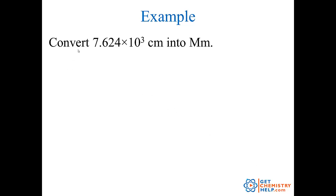Okay, great. Let's try one more. This problem says, convert 7.624 times ten to the third centimeters into megameters. Now, there isn't a direct conversion from centi to mega, because it always has to go through the base unit. In our case, the base unit is the meters. So let's just write this problem out and see what we can do. 7.624 times ten to the third centimeters.